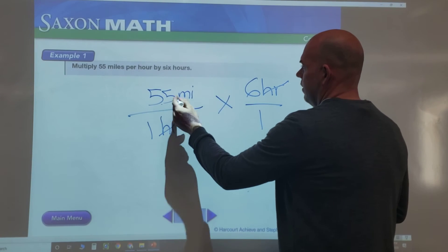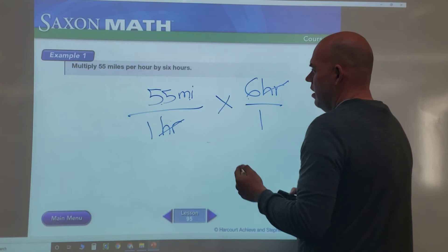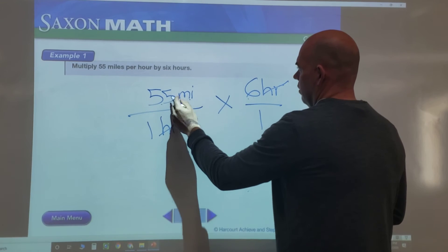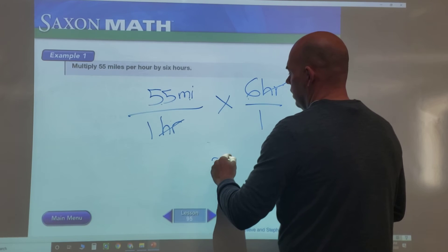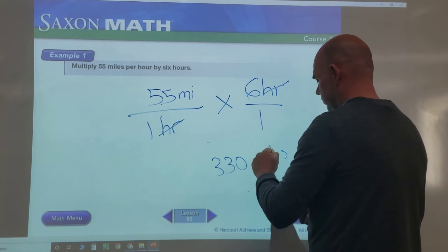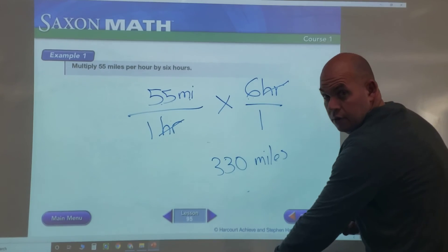Then we just have 55 miles times 6. Six times 50 is 300, and six times 5 is 30, so we get 330 miles. Pretty groovy.